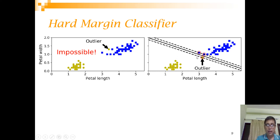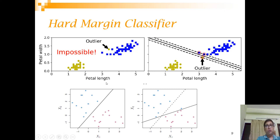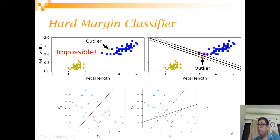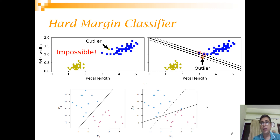Consider another example: you have a blue class and a purple class, and if a new blue point is added, there is a dramatic shift in the hyperplane or decision boundary. This kind of behavior is undesirable — when your classifier behaves this way, it is not robust. So what you want to do is give some amount of allowance, some slackness.